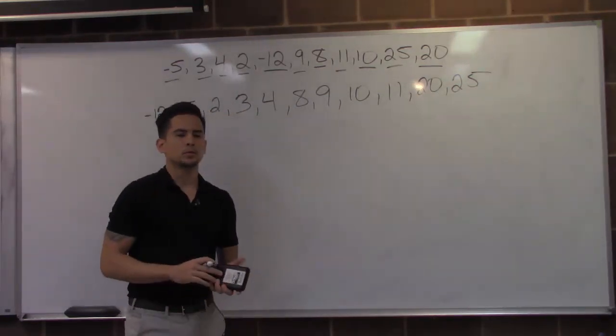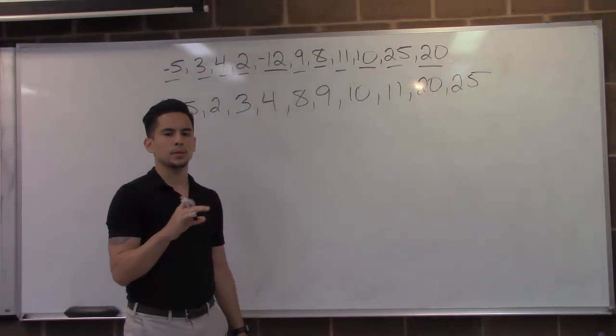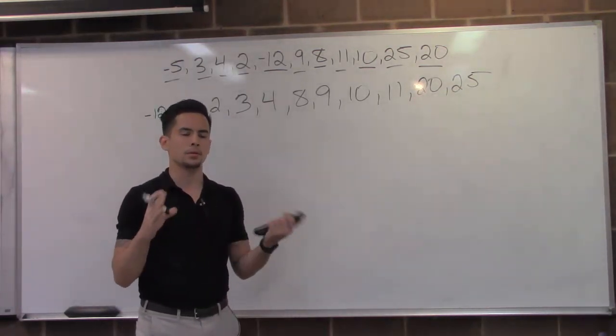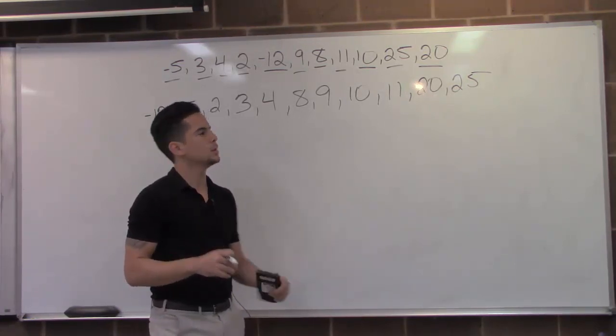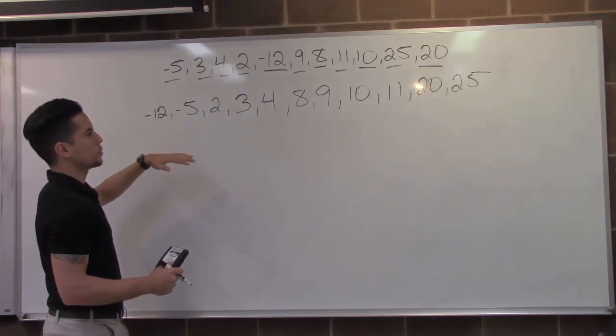One thing I like to do is count them to see whether or not I'm going to have two numbers in the middle or one number. This can help me determine what the median is. So I'm going to count it. I'm going to see how many total numbers I have.